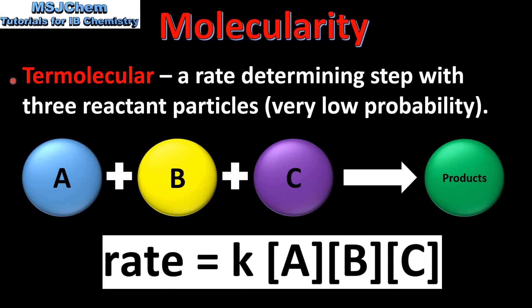And finally we have termolecular. This is a rate determining step with three reactant particles. A termolecular reaction has a very low probability of occurring. So here we have three reactant particles A, B and C reacting together to form one or more products.